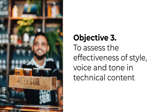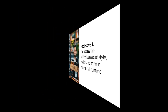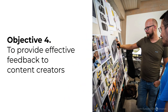The third objective is for you to assess the effectiveness of style, voice, and tone in technical content. This goal is directly linked to objective two. To manipulate style, voice, and tone, you must be able to assess its effectiveness within its rhetorical context. You'll learn one specific testing technique in module six. The fourth objective is for you to provide effective feedback to content creators. Much of the work techcom pros do is editorial, so you'll practice techniques for giving feedback in many peer review activities starting in module two.